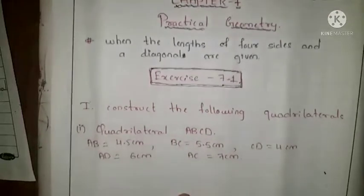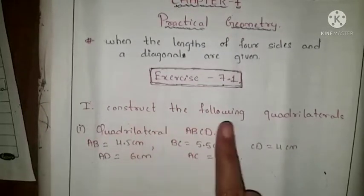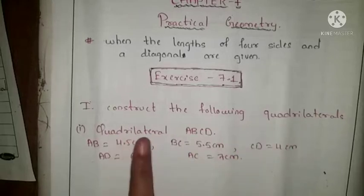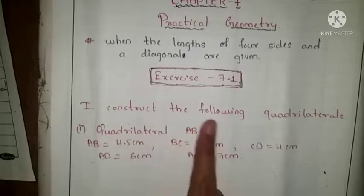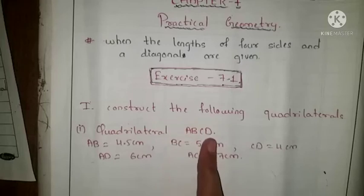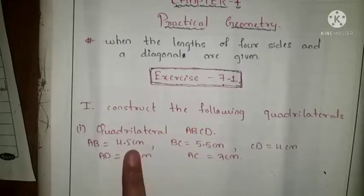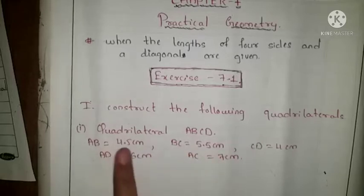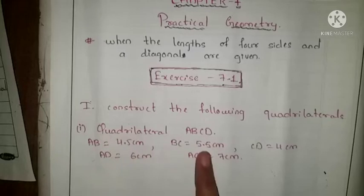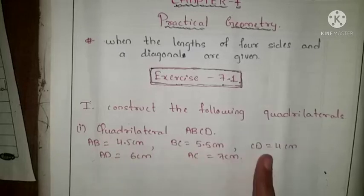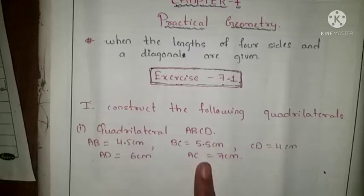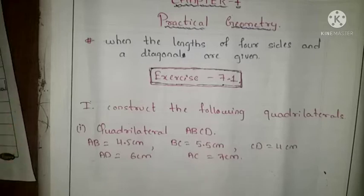This is the first question: construct the following quadrilaterals. Here they have given quadrilateral ABCD. They have given the lengths of four sides and a diagonal: AB = 4.5 cm, BC = 5.5 cm, CD = 4 cm, AD = 6 cm, and diagonal AC = 7 cm. These are the measurements given in the question.